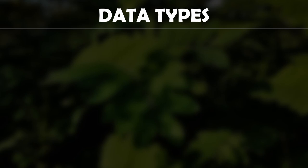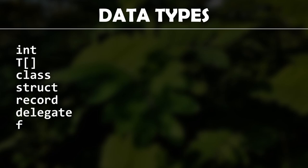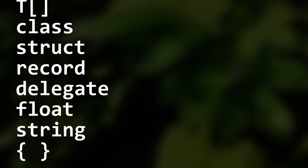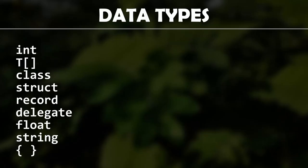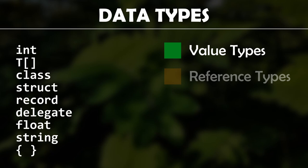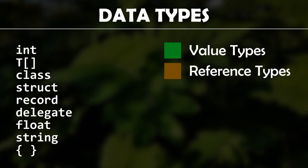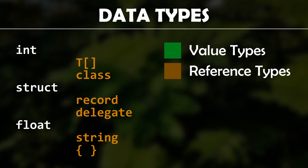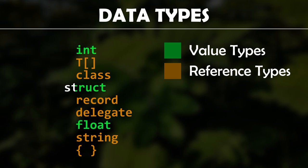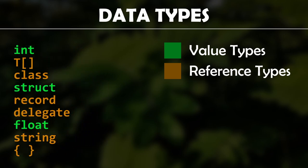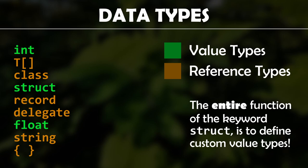In C#, there's a surprising amount of data types: integers, arrays, classes, structs, records, delegates, floating-point numbers, strings, anonymous types within LINQ expressions. But every single one of these types can be organized into one of two categories — value types and reference types. Almost everything in C# is a reference type. There are only two things that aren't: primitive number types like integers and floating-point numbers, and structs. Primitive numbers are because, as we'll see, it doesn't make much sense any other way, and structs are because this is literally all they do differently from classes. The only reason structs exist is to allow you to make your own value types — and as you'll soon see, that's really powerful for performance.